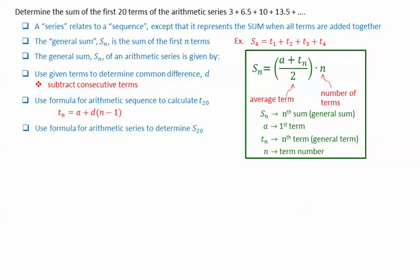We use the formula Tn equals a plus D times n minus 1. We can then use the formula for the arithmetic series to determine the 20th sum, S20.